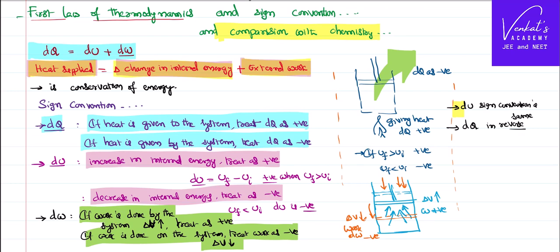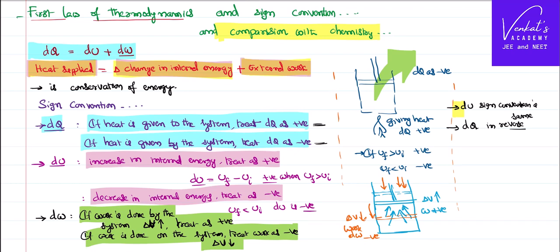In chemistry, the DQ sign convention is reversed: heat given to the system is treated as negative, and heat given by the system is treated as positive. To compensate, DW is also reversed — work done by the system is treated as negative. Because both DQ and DW are reversed, the two reversals cancel each other out, and the final result ends up being the same. Only the way they handle it is different, but the end result is the same.